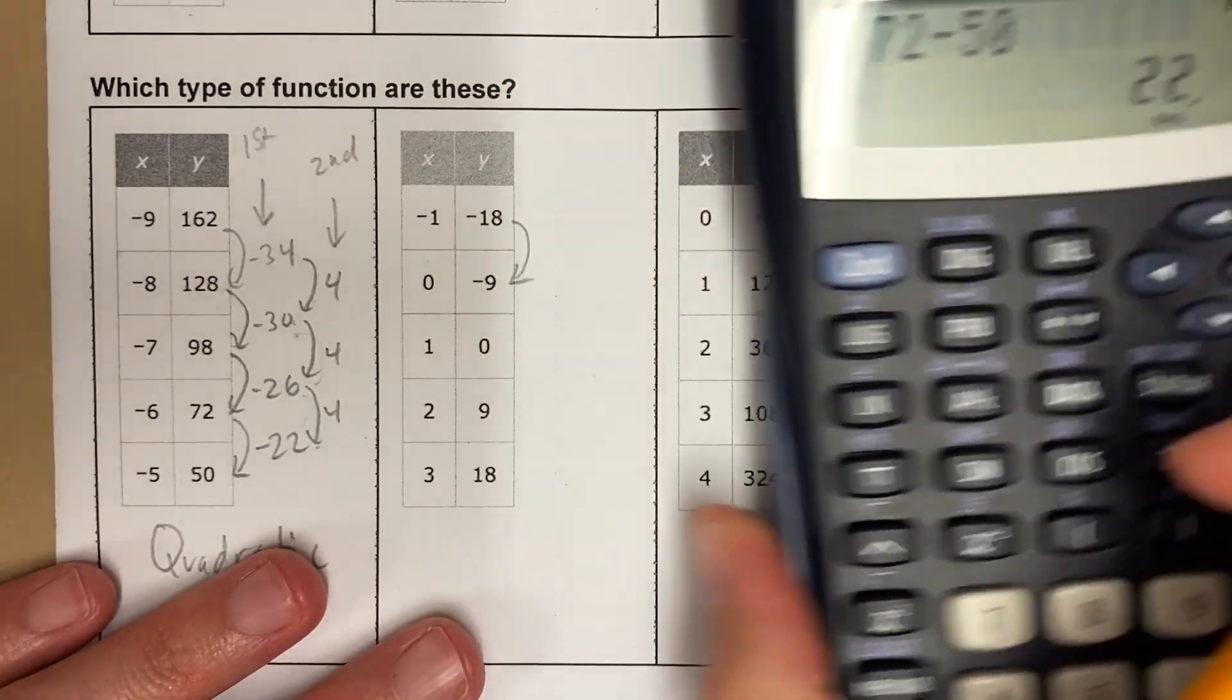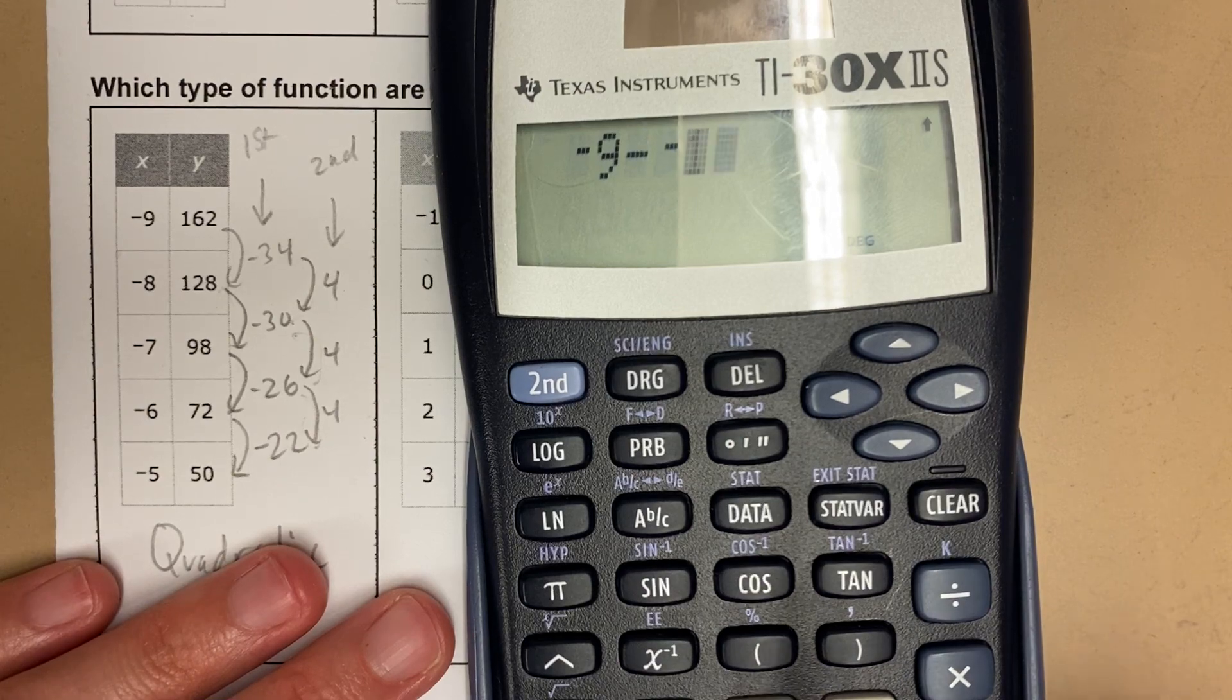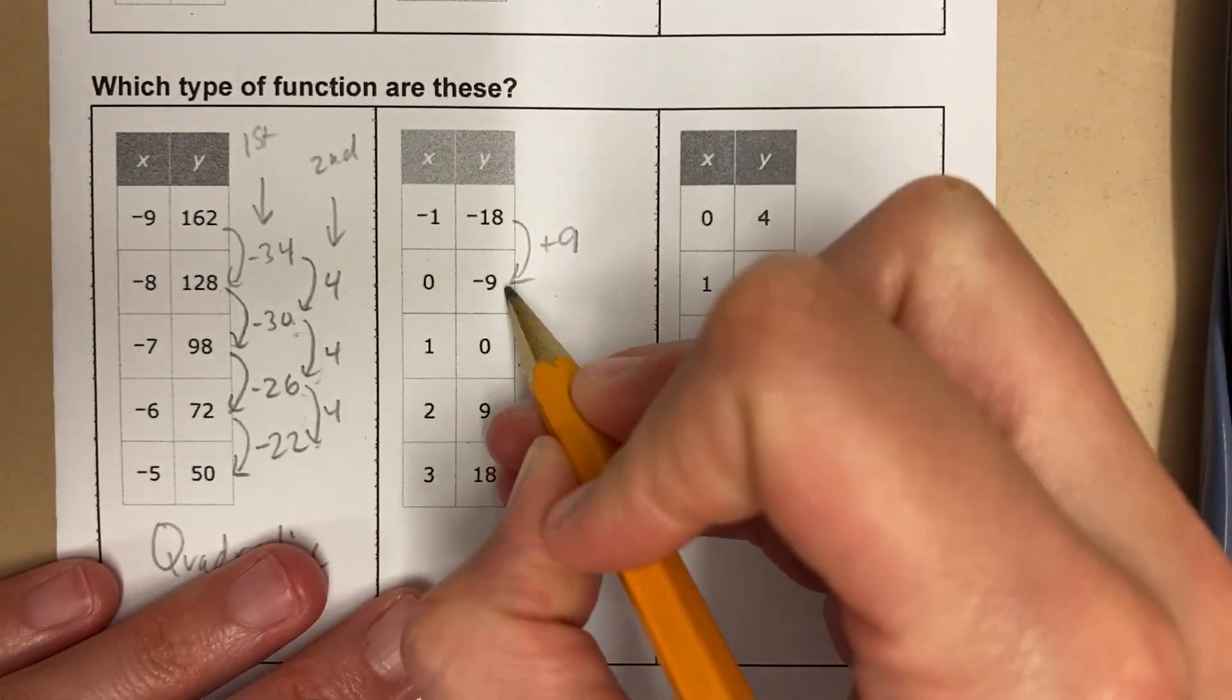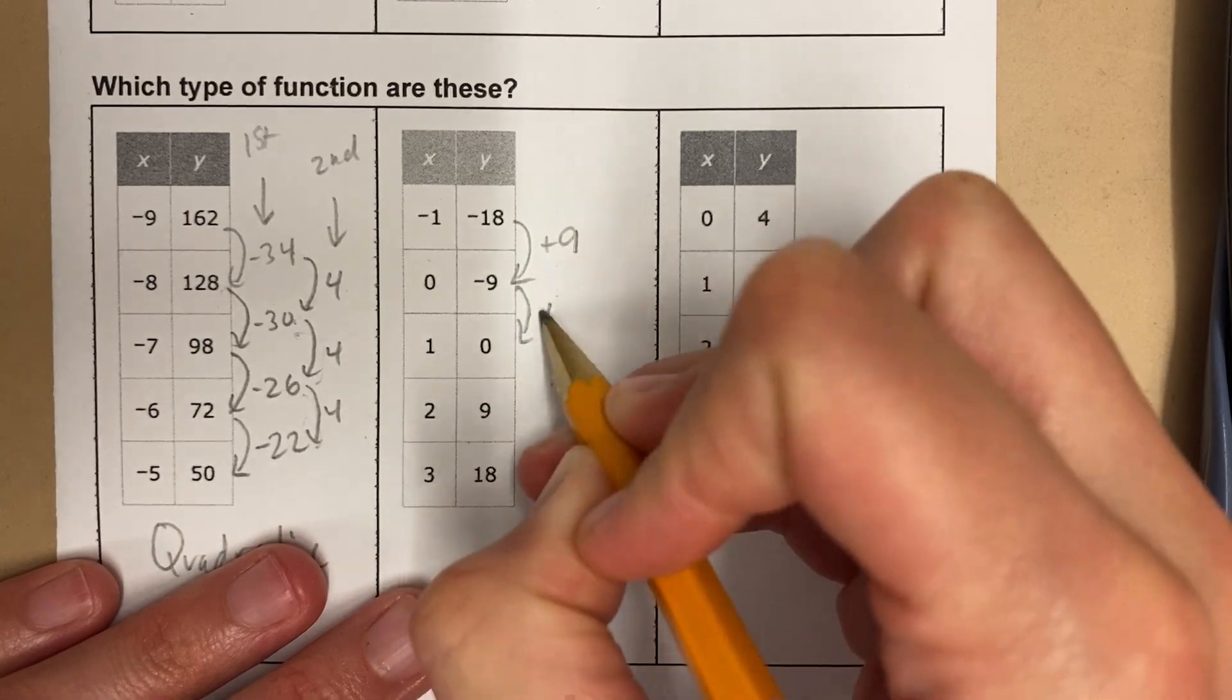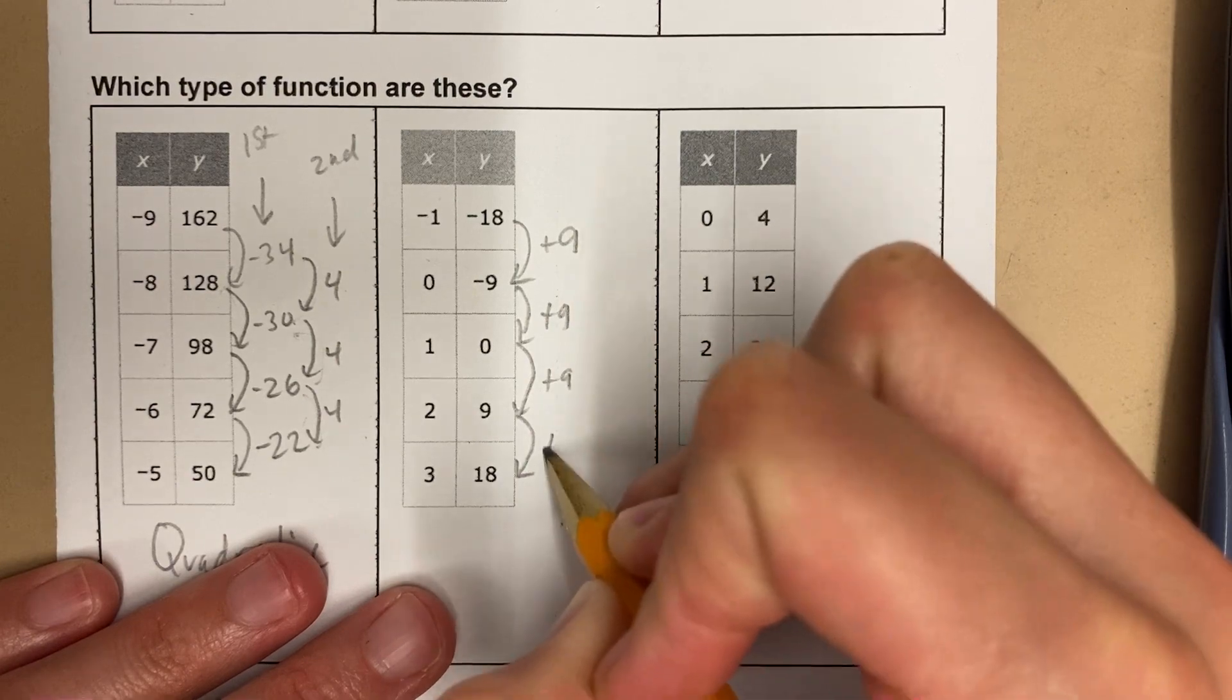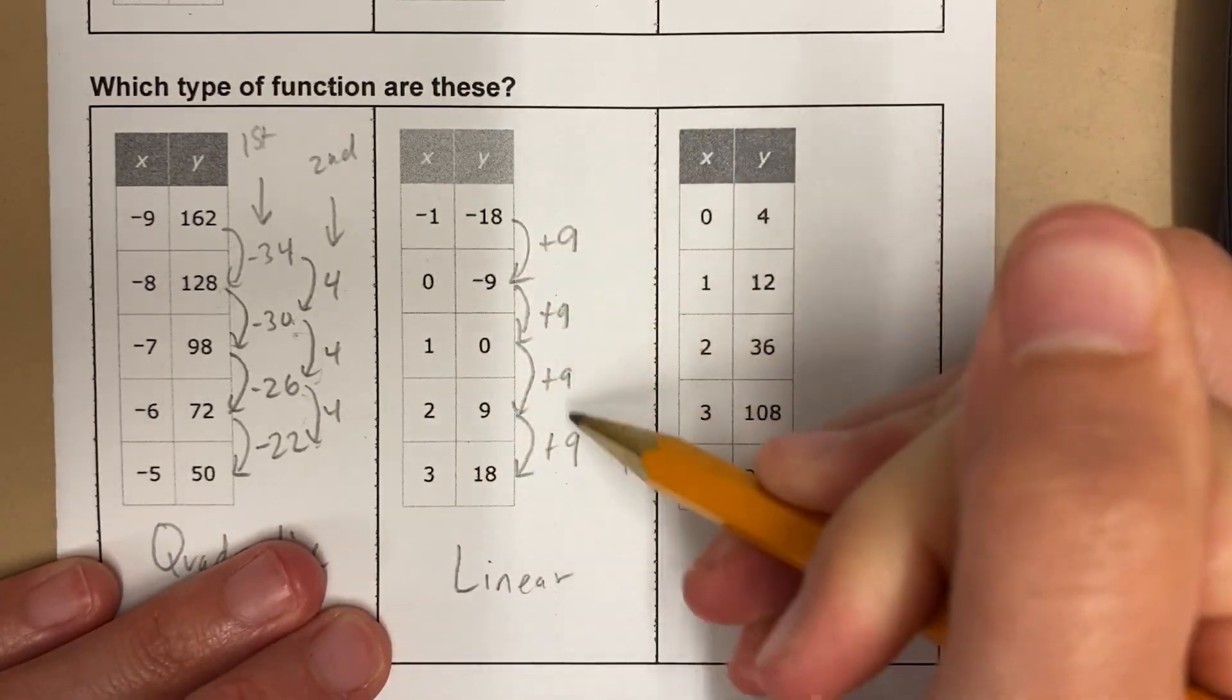Let's try this one. So let's check for the difference first. This is negative 9 minus negative 18. That's 9. So this is a difference of plus 9. Negative 9 to 0, that's plus 9 too. 0 up to 9, we know that's plus 9. 9 plus what is 18? It's 9. This is linear. We have the same, we're adding the same number each time.